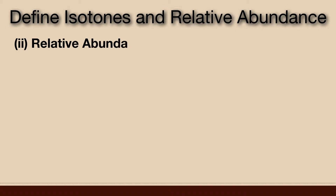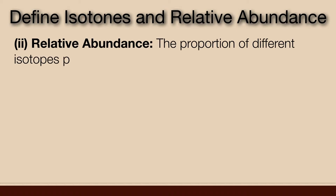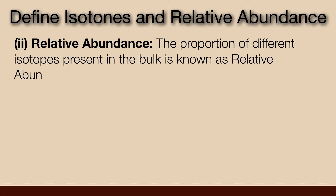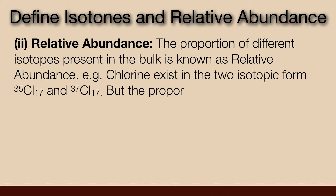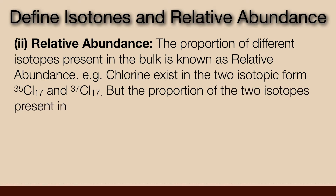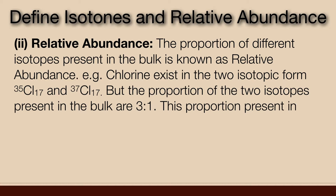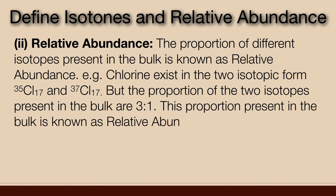Relative Abundance: The proportion of different isotopes present in the bulk is known as relative abundance. For example, Chlorine exists in two isotopic forms — Chlorine-35 and Chlorine-37 — but the proportion of the two isotopes present in the bulk is 3:1. This proportion present in the bulk is known as relative abundance.